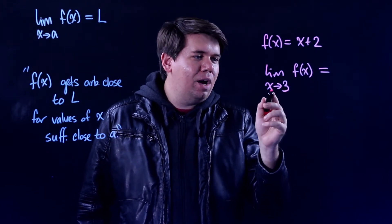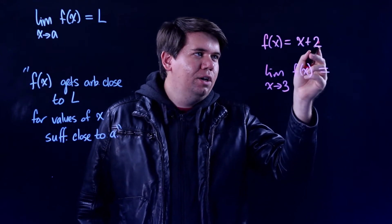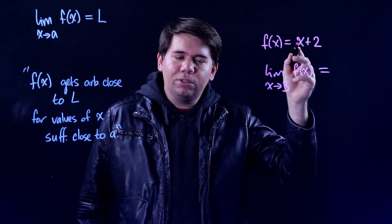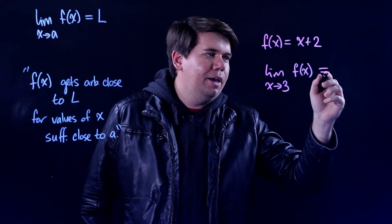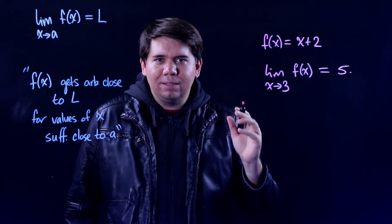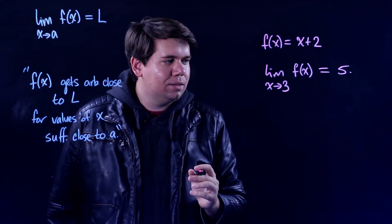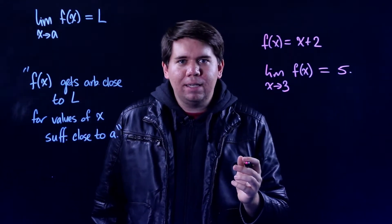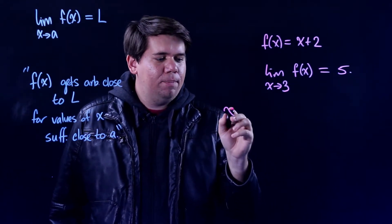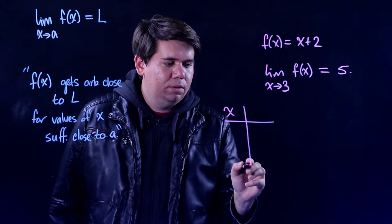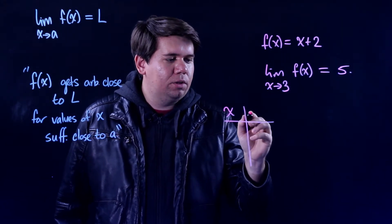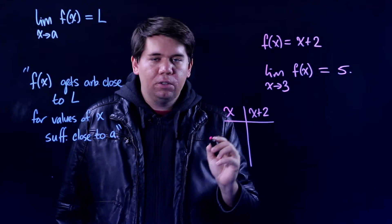You might just look at this and be like, well if you pick values really close to 3, you're going to get things really close to 5. Maybe you could have guessed that, but let's go through how you could reason through this a little bit more precisely. One thing you might do is make a table.